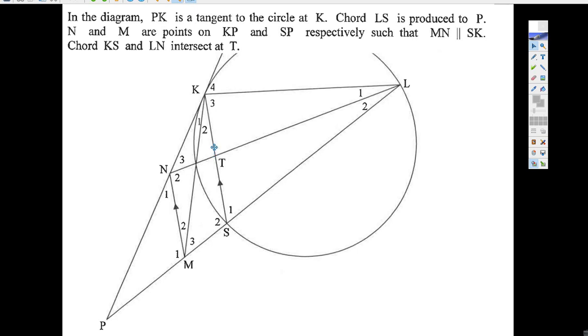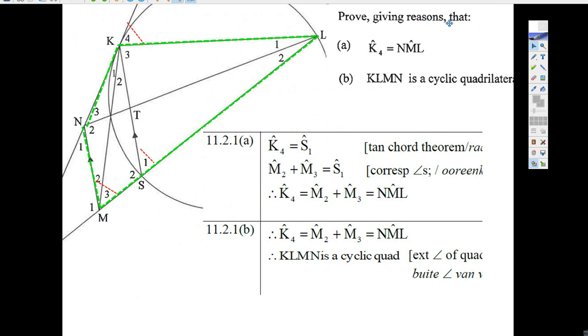Okay. Chords KS, KS and LN intersect right there at T. Okay, I've got that picture. Now, here we go. Prove giving reasons that K4 is equal to NML. Well,